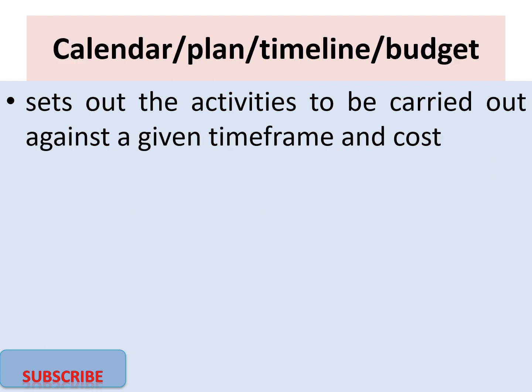Another important aspect is the timeline or budget. This sets out the activities to be carried out against a given time frame and the cost. It is important for anyone carrying out research to have a timeline and budget, as this will help guide you when you miss certain targets. The timeline will remind you of challenges and illustrate the costs for each particular activity.